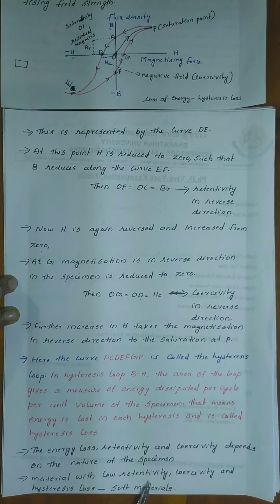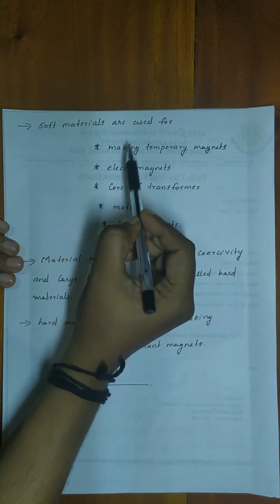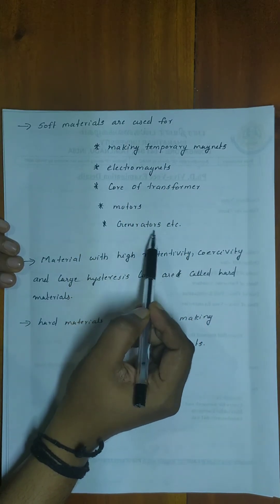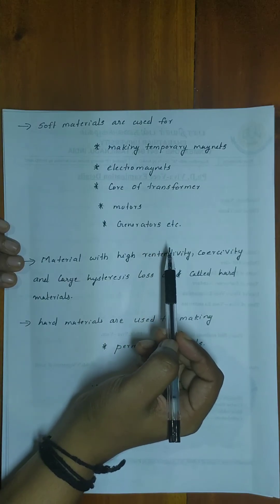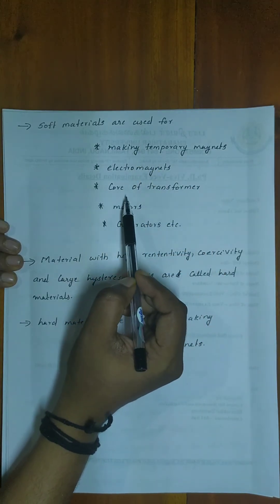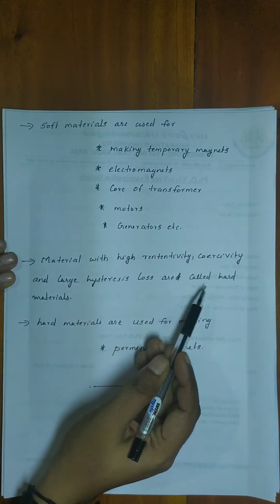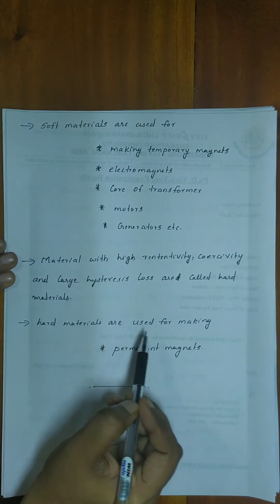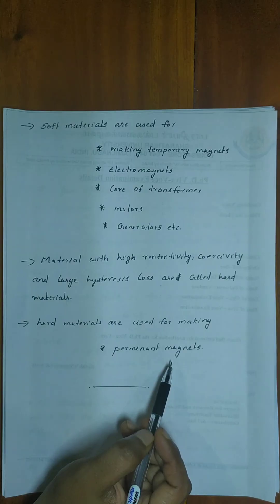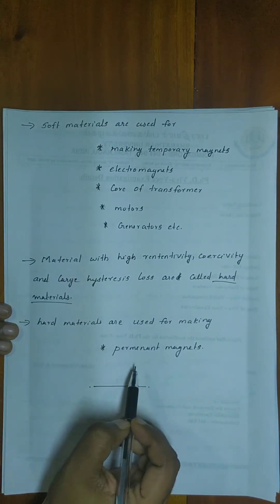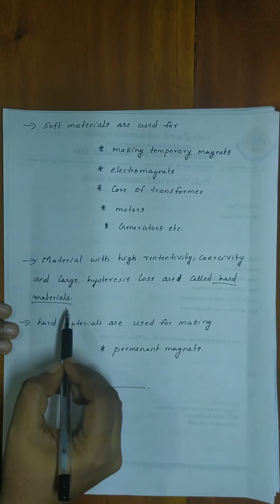Materials with low retentivity, coercivity, and hysteresis loss are known as soft materials. Soft materials are used for making temporary magnets like electromagnets, cores of transformers, motors, and generators. Materials with high retentivity and coercivity are called hard materials. Hard materials are used for making permanent magnets.